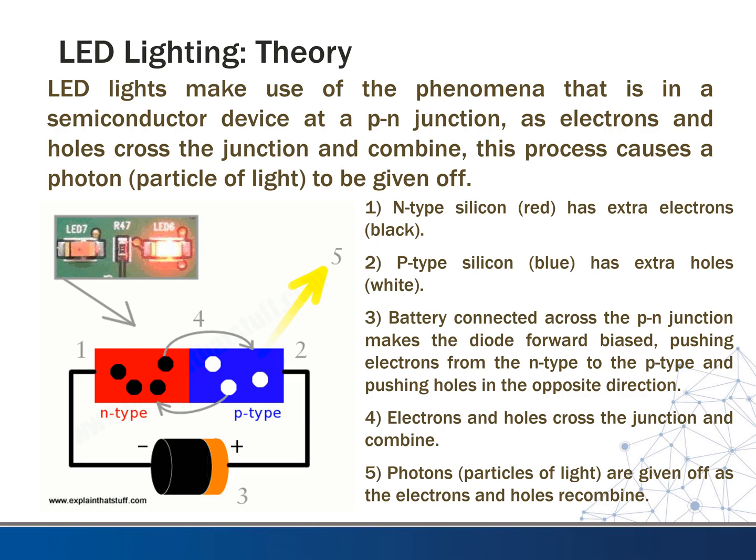LED lights make use of the phenomenon in semiconductor devices and what happens at the PN junction. As electrons and holes cross the junction and recombine, this process causes a photon — which is essentially a particle of light — to be given off. We don't want to get too technical in this survey course, but this is the five-step process that happens. This is a result of some of what Einstein did with his photon-related discoveries.